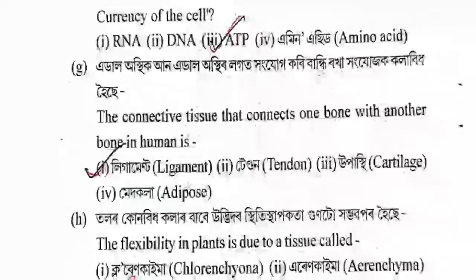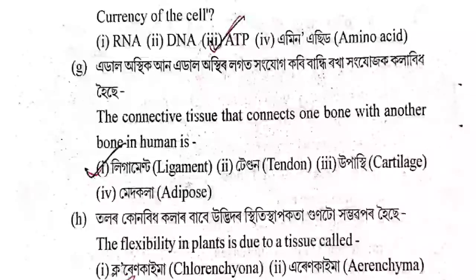Next question: Kolabit hoi se? The connective tissue that connects one bone with another bone in the human body is: ligament, tendon, upasthi, or medkola? The correct answer is option 1 — ligament.